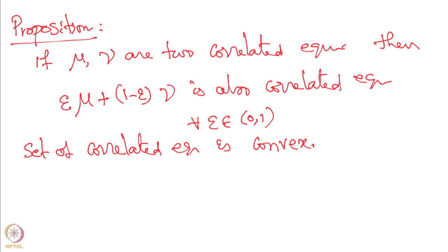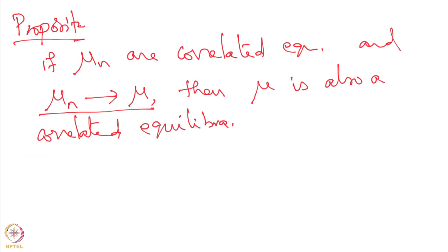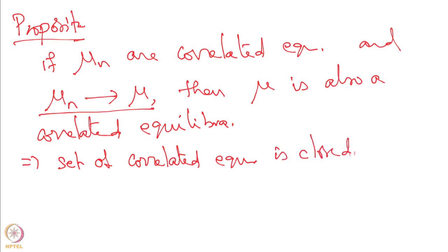Another proposition: if μ_n are correlated equilibria and μ_n converges to μ, then μ is also a correlated equilibrium. Since S1 and S2 are finite, convergence is straightforward. This follows from the continuity of the inequality. Therefore, the set of correlated equilibria is closed. Since the set of correlated equilibria is a subset of probability distributions on the finite set S1 × S2, that set is compact, and hence the set of correlated equilibria is also compact.